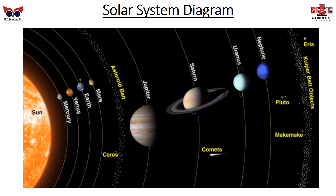This is a simple not-to-scale diagram showing where everything is located. You can see the four inner rocky planets that are relatively close together and relatively small, then the asteroid belt, Jupiter, Saturn, Uranus, and Neptune. You've got comets, and then Pluto, Eris, and the Kuiper Belt objects, which are the extreme far-out objects on the edge of the solar system.